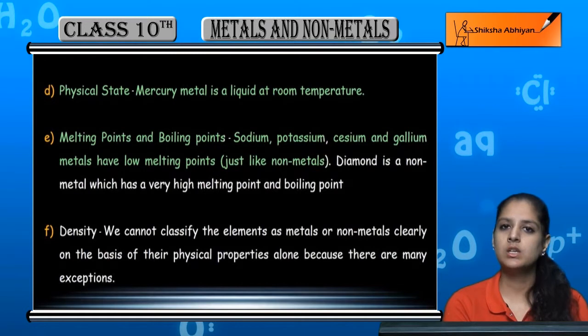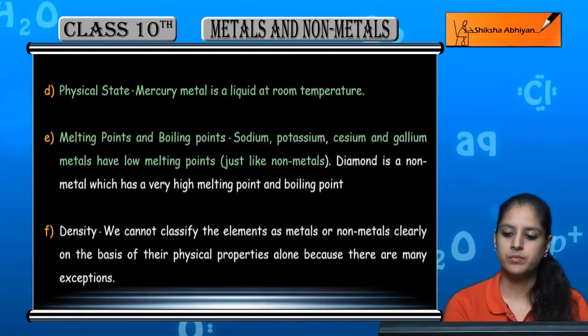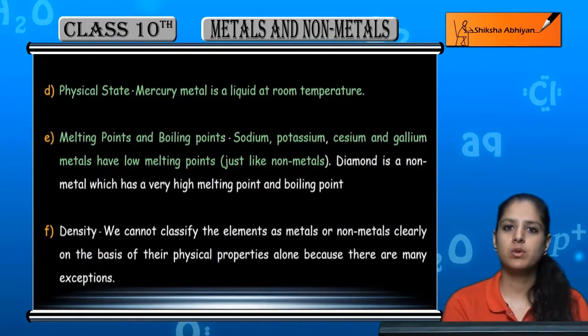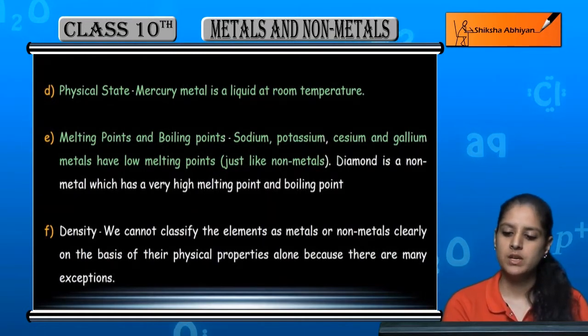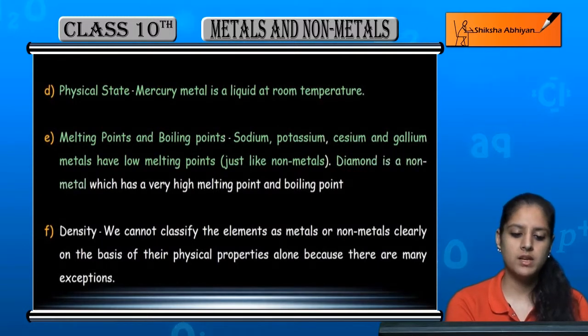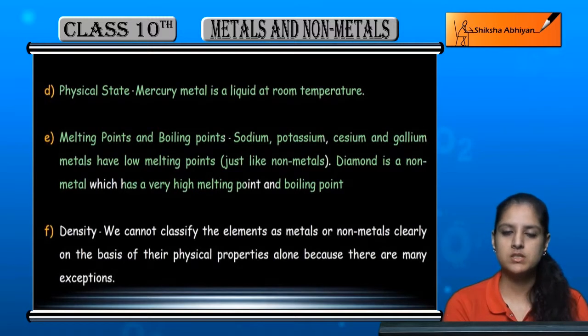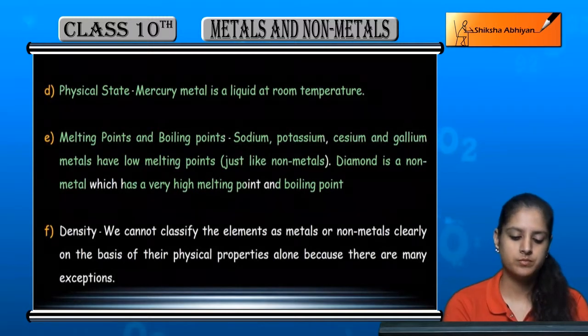Sodium, potassium, cesium, and gallium have low melting points — similar to non-metals. Non-metals generally have low melting and boiling points, but diamond is a non-metal with a very high melting point and boiling point, so this is an exception.